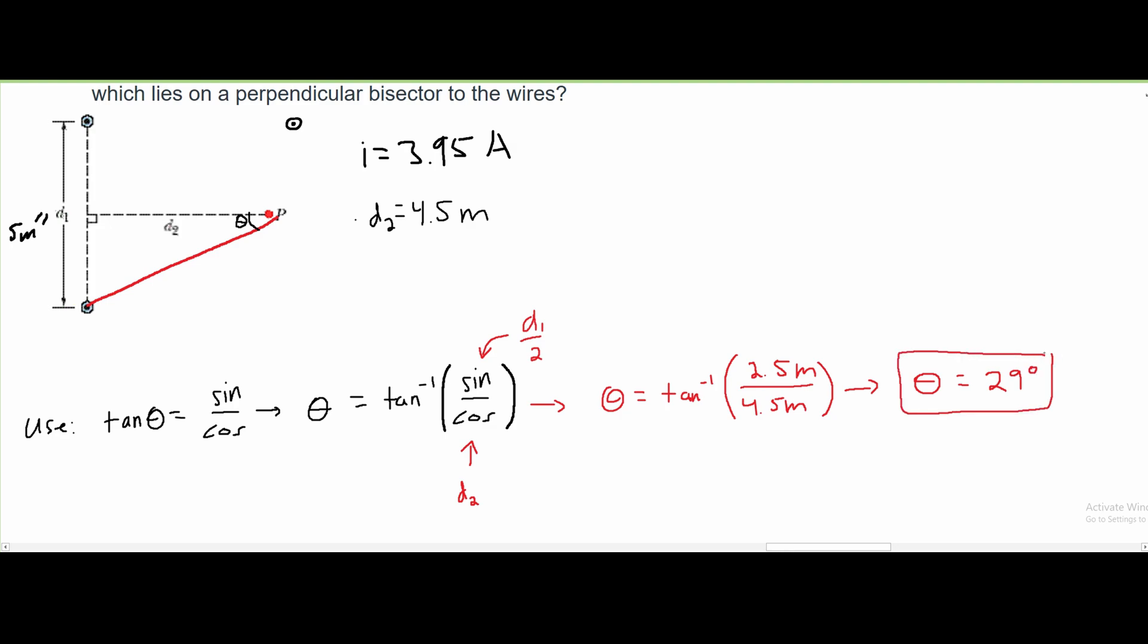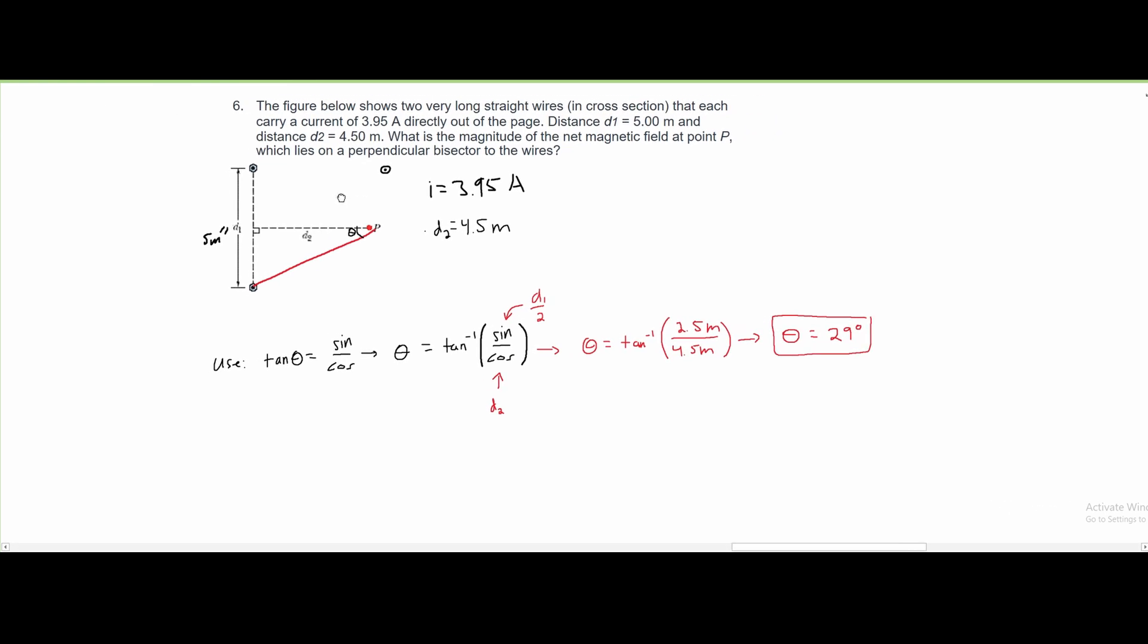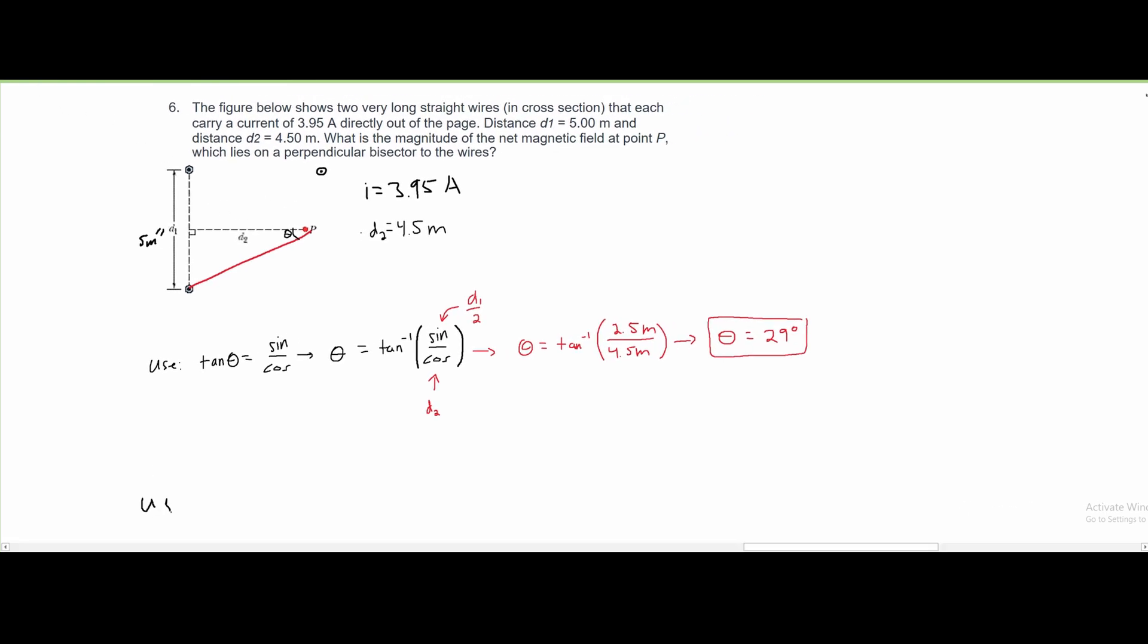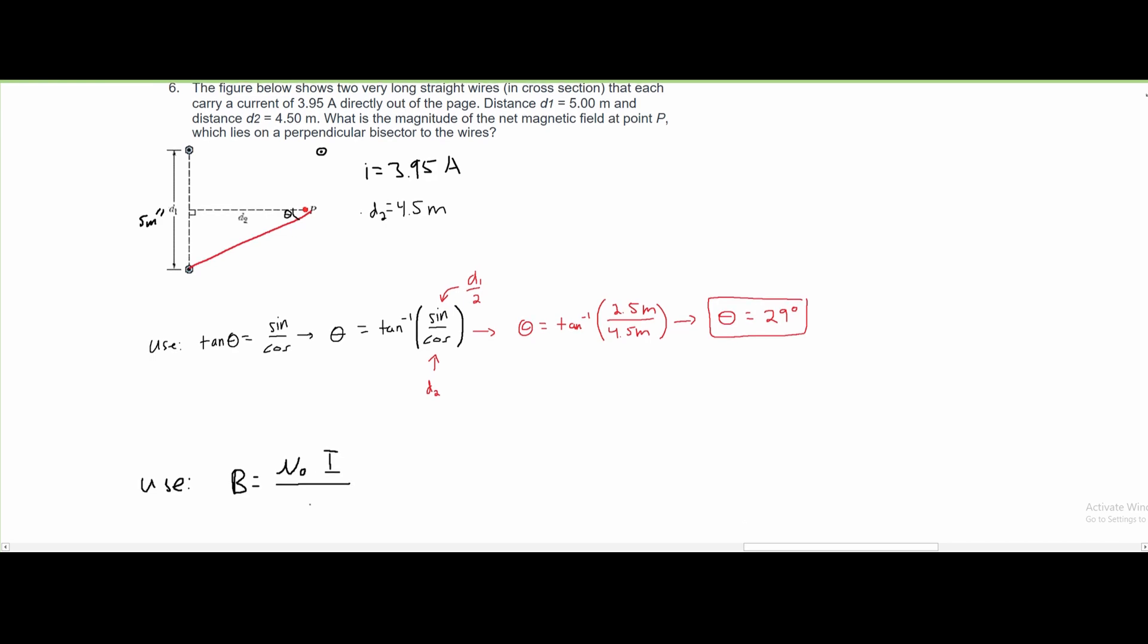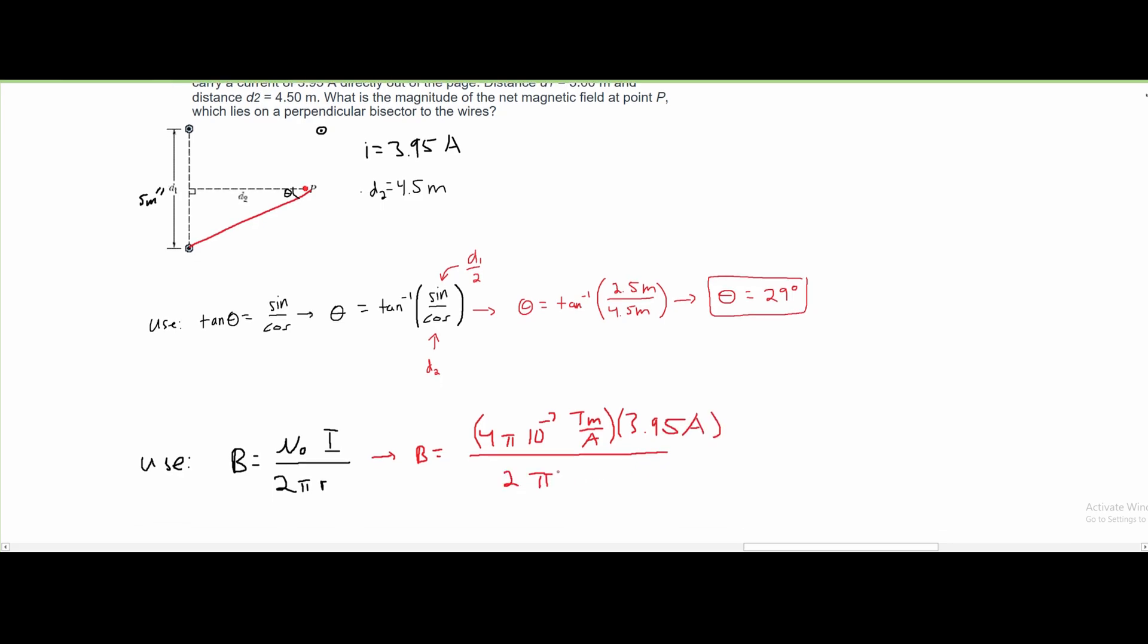Next we can find our magnitude. The formula is B = μ₀ times the current divided by 2πr. This is the formula to find the magnetic field of a wire. We can start plugging in our values: B equals the constant 4π×10⁻⁷ tesla meters over amp for μ₀, and our current I is 3.95 amps given to us.